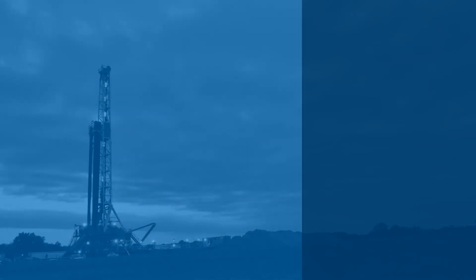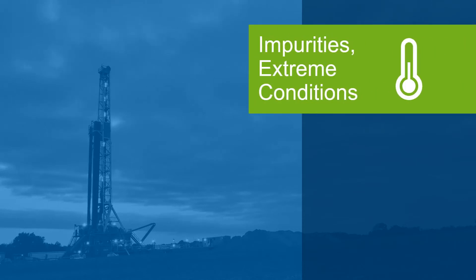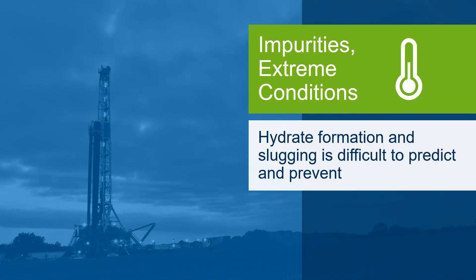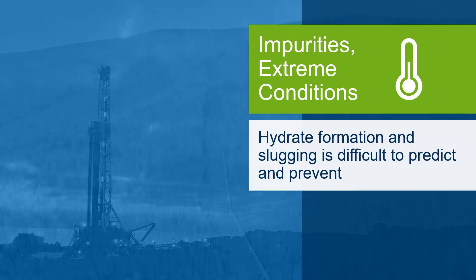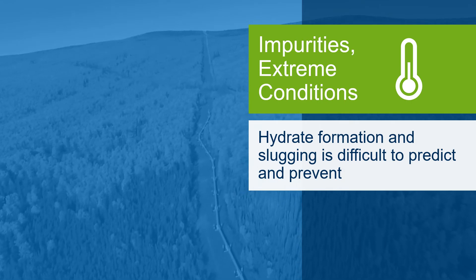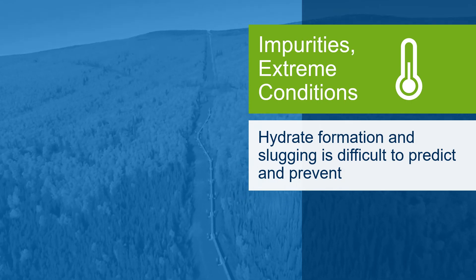Increasing pipeline flow without compromising safe operations can be challenging. Impurities and the extreme range of conditions that fluid experiences from the wellhead through the process to the gathering networks can result in damaging blockages and other flow assurance issues. Issues like hydrate formation and slugging are difficult to predict because they are complex and depend on the pipeline conditions and flow composition, including impurities.